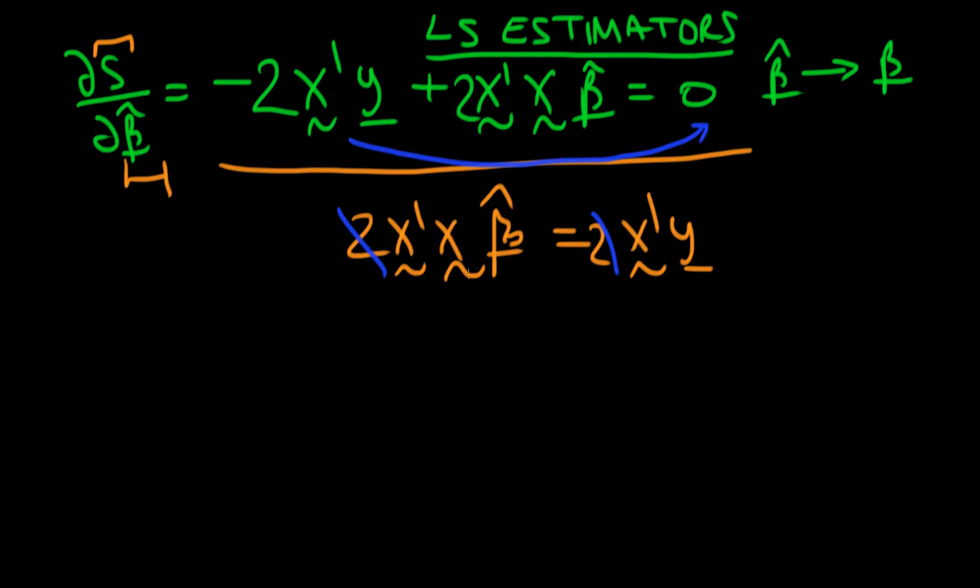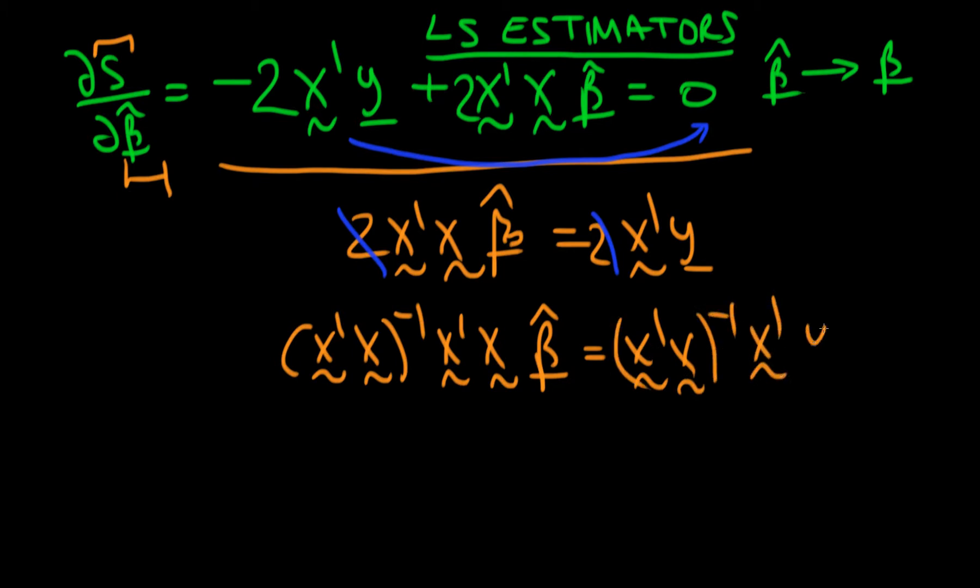So how do we get beta hat on its own now? Well, the idea is that we have to pre-multiply both sides by the inverse of x prime times x. So the left hand side becomes the inverse of x prime x times x prime x times beta hat, which is equal to x prime x to the power minus 1 times x prime y.